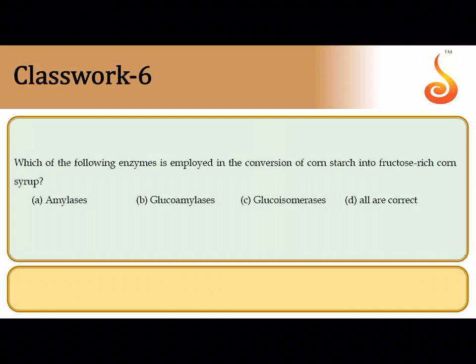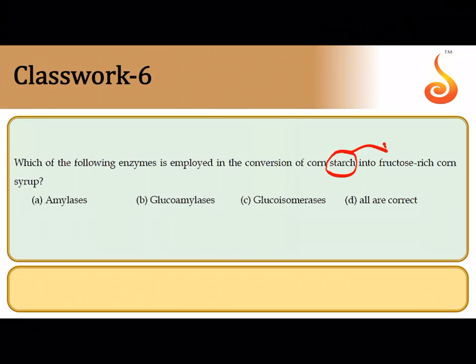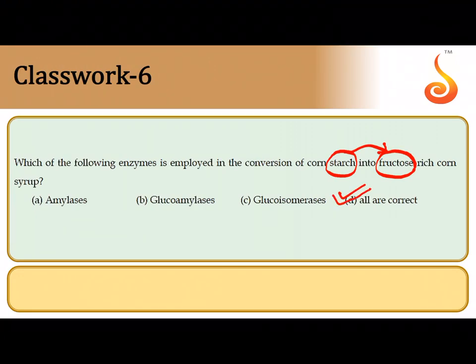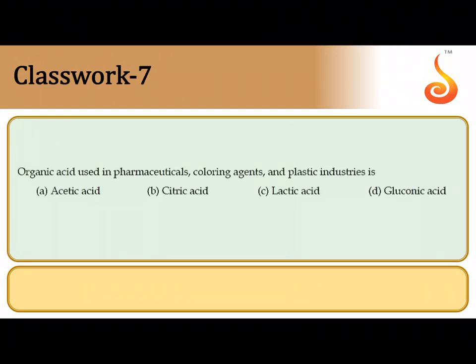The sixth question asks which enzymes are employed in conversion of corn starch to fructose-rich corn syrup. You are converting a polysaccharide, starch, into a monosaccharide, fructose. Starch is composed of glucose, and you also need to isomerize glucose into fructose. You will need amylases, glucoamylases to obtain glucose residues, and isomerases to obtain fructose, so all of them are correct options.